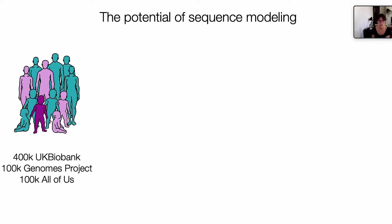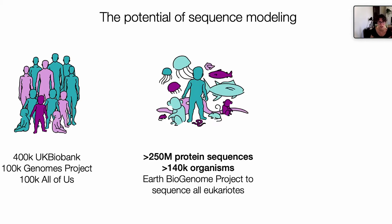And when I talk about sequences, I'm not just talking about sequences in the human population, for which we have more and more data available. I am primarily talking about sequences across diverse organisms. There is a wealth of data there — just in Uniprot, there's over 250 million protein sequences across more than 140,000 organisms, not even mentioning the plans of the Earth Biogenome Project to sequence eukaryotes on Earth.